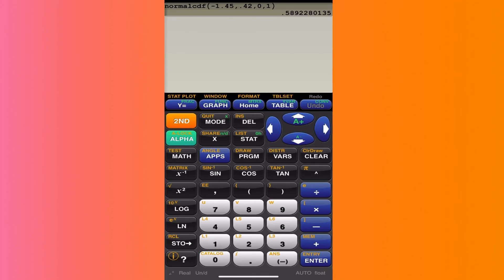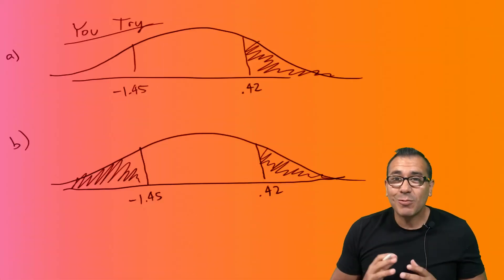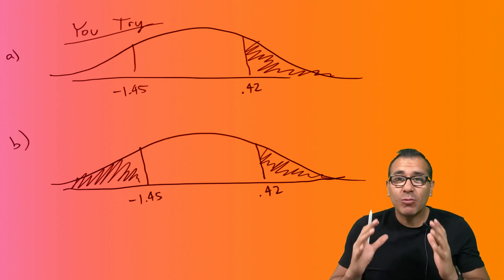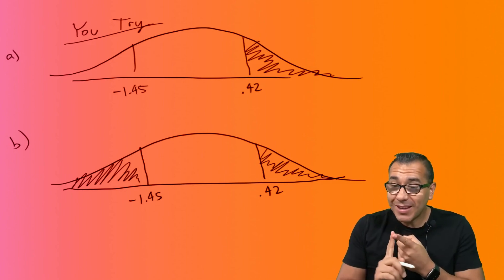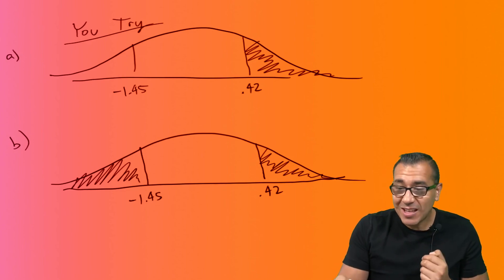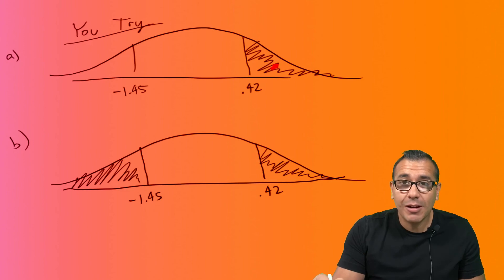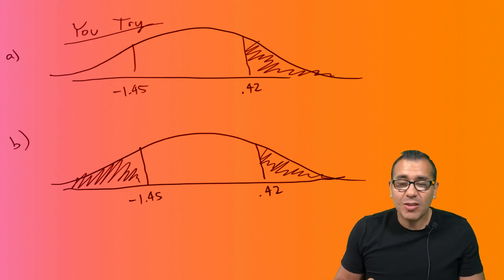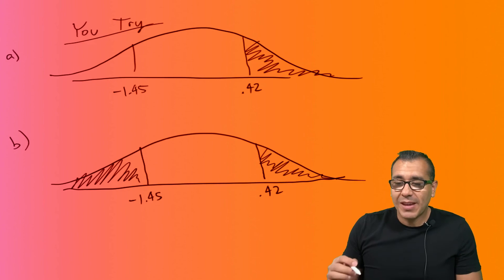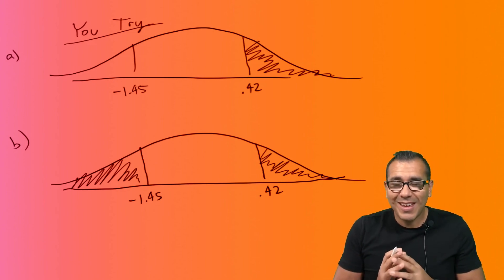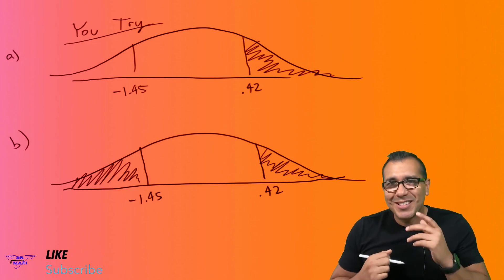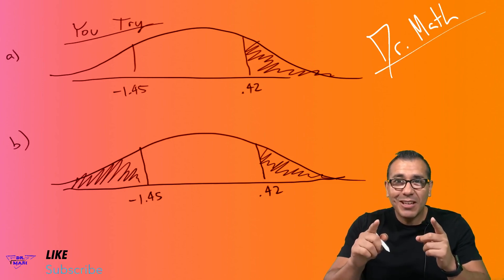If you have questions, comment down below. Now we get to the most important part of the video — where you try it. For part A, what did you plug into your calculator as your lower, upper, mean, and standard deviation to find that area? For part B, what is that area? Comment down below what you entered and what answer you got. Don't forget to smash that thumbs up button, subscribe, and we'll see you mathletes in the next video.